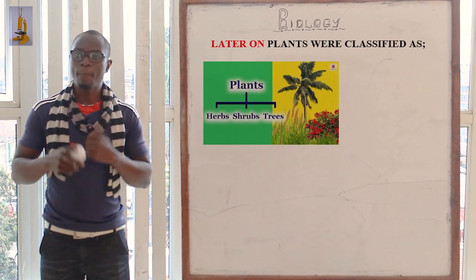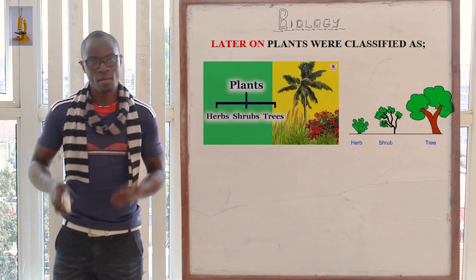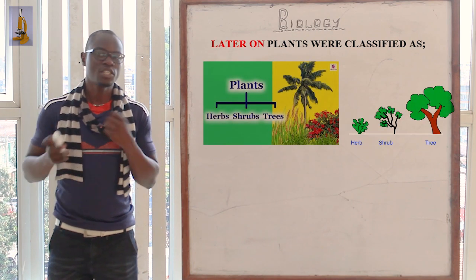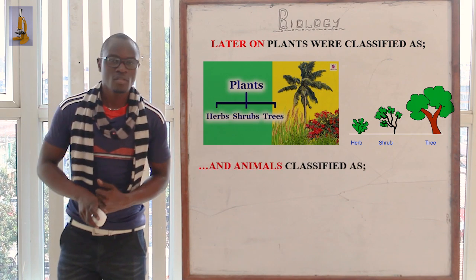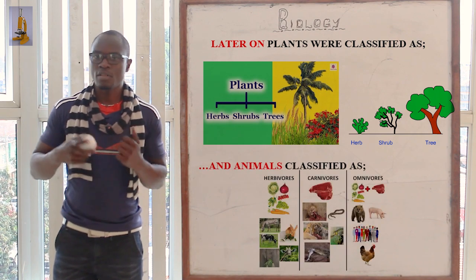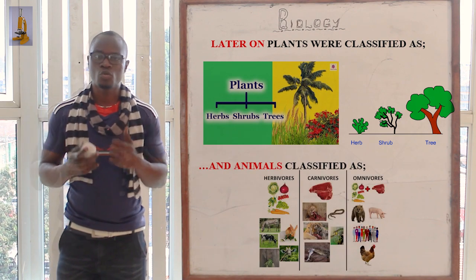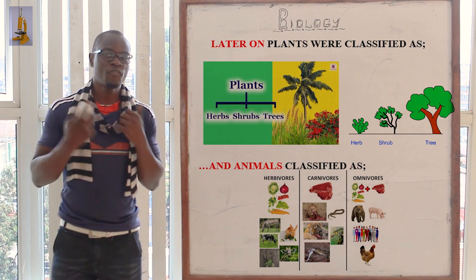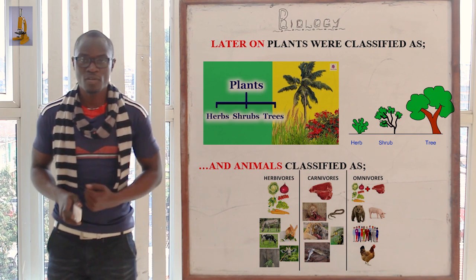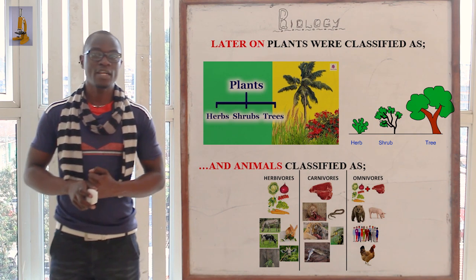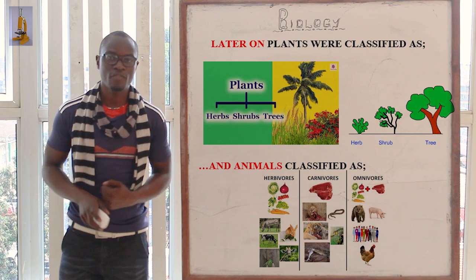Later on, the plants were further classified into herbs, shrubs, and trees. The animals, on the other hand, were classified according to the feeding model, where we had the carnivores, the herbivores, and then finally the omnivores.